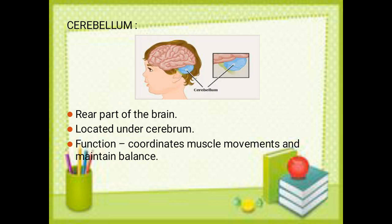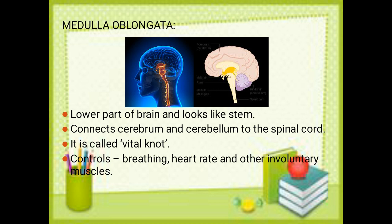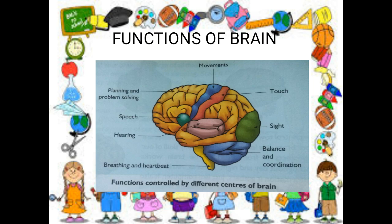The cerebellum is the rear part of the brain located under the cerebrum. Its functions are to coordinate muscle movement and maintain balance of the body. The medulla oblongata is present at the lower part of the brain and looks like a stem. It connects the cerebrum and cerebellum to the spinal cord, and it controls breathing, heart rate, and other involuntary muscles.